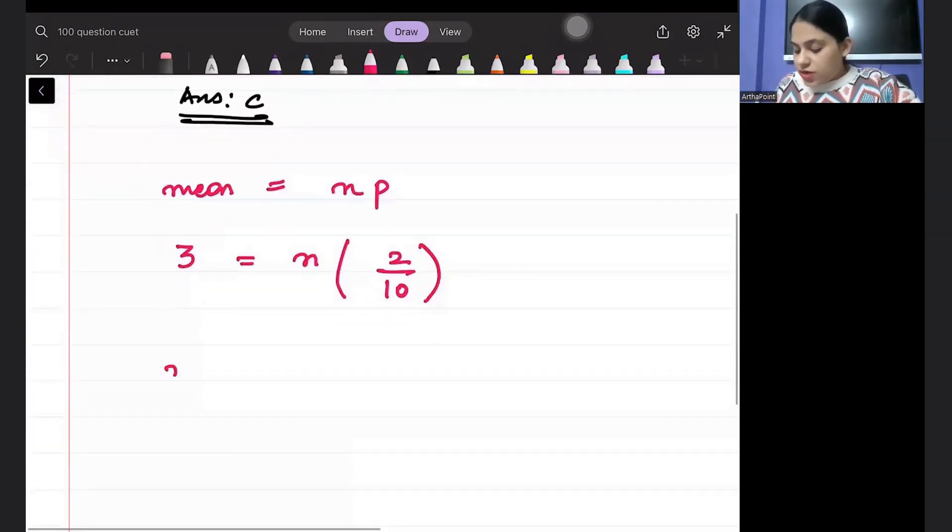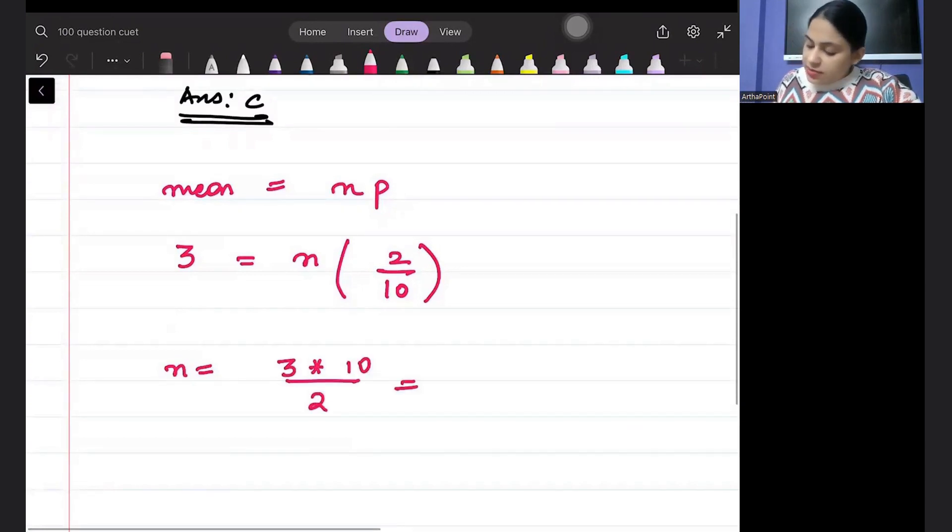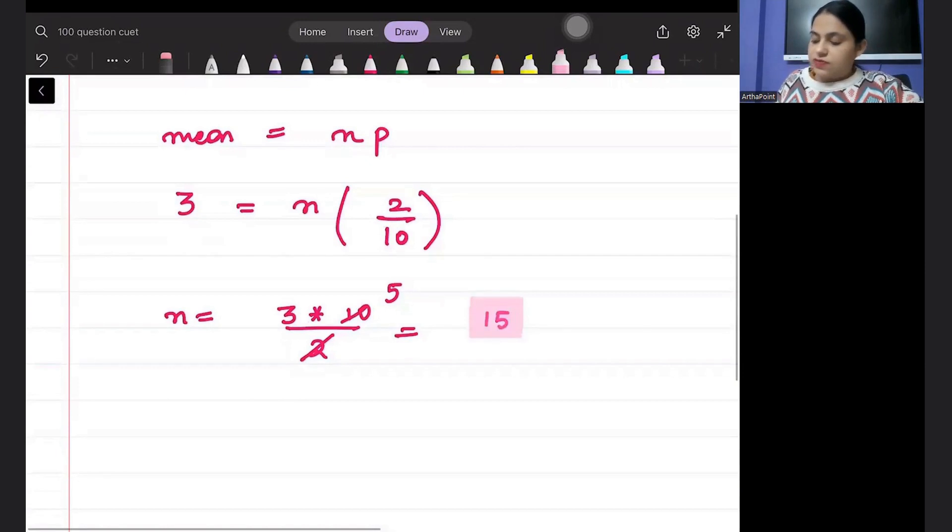Number of trials, how do we get it? 3 into 10 by 2. That means I will get 15. So the number of trials will be 15.